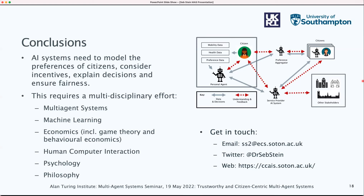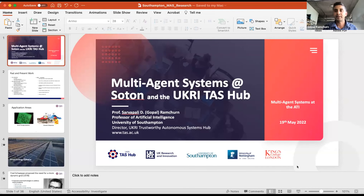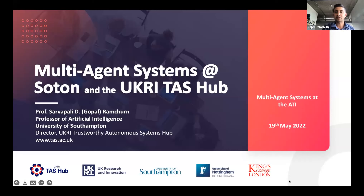Thanks Seb. The one takeaway from my talk will be: do more use-inspired research and take a human-centered approach to multi-agent systems research. I'm a professor of AI at Southampton and director of the UKRI Trustworthy Autonomous Systems Hub. I've been at Southampton for 20 years — I did my PhD here and have seen the group grow and shrink and grow again. I've done a number of interesting projects, starting from foundational work on the Internet of Things — what we used to call ubiquitous computing — and working on defense-related problems as part of the Aladdin project.